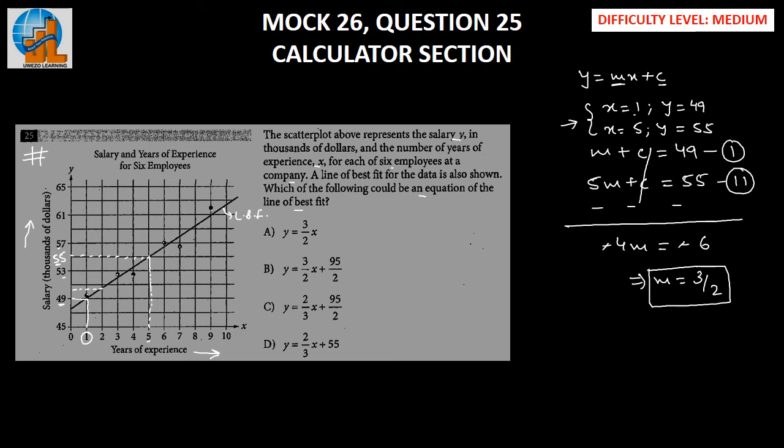We have found the value of M, so all we have to do is substitute the value of M in equation number 1 and find our C. This implies 3 by 2 plus C equals 49, which gives us C equals 49 minus 3 by 2. This should be 98 minus 3 by 2, which would equal 95 by 2.